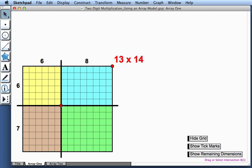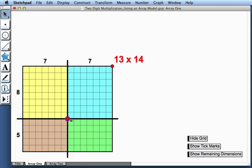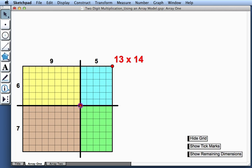By dragging this red point that sits inside the array, we can change the dimension of our four smaller arrays. Notice though that as I drag this point, the overall dimensions of our large array remain the same. It's still 13 by 14.